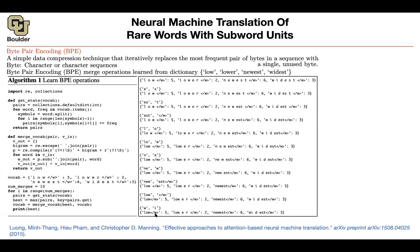Some entries in the new dictionary make sense — it's LOW, it has a meaning. Then you have LOW, E, R, end-of-word, newest, and widest. The rest of it is that you're going to do word embedding — these are going to be your words. LOW is your word; LOW, E, R, end-of-word are your words, et cetera. This is your new dictionary, and you can do word embedding on that.